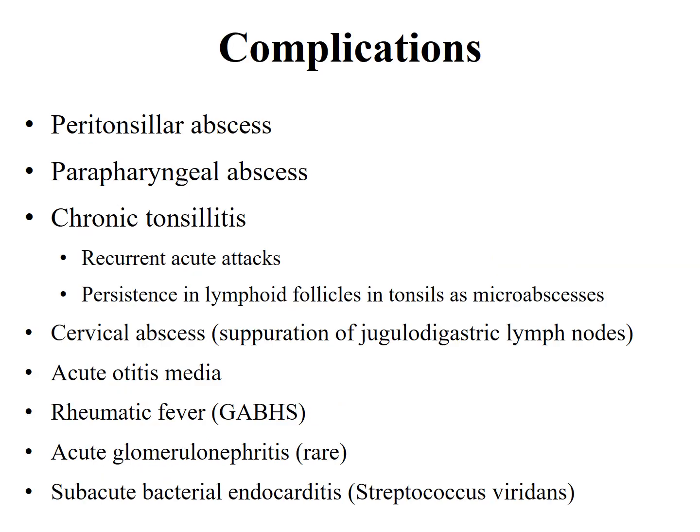If acute tonsillitis is not treated properly, complications can arise such as peritonsillar abscess and parapharyngeal abscess. If the patient continues to have recurrent acute attacks with persistence of lymphoid follicles and micro-abscesses in the tonsils, it will lead to chronic tonsillitis. Other less common complications include cervical abscess, acute otitis media, rheumatic fever, acute glomerulonephritis, and subacute bacterial endocarditis, though the last three are rare.